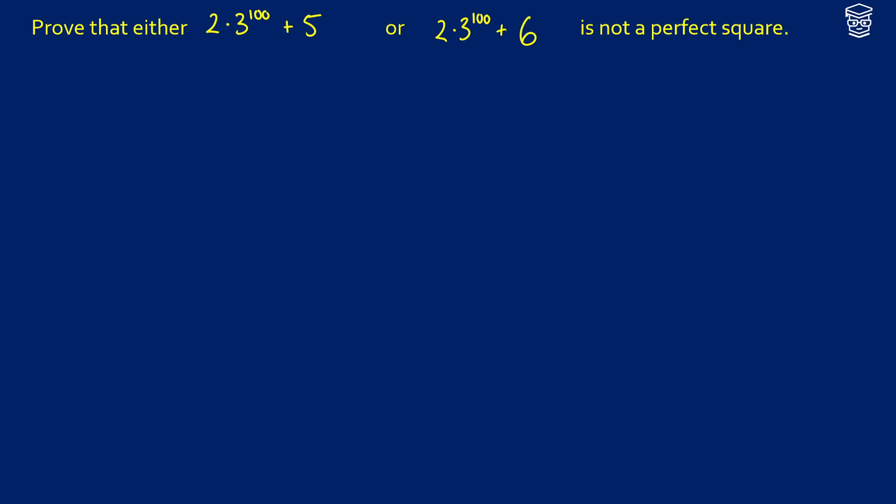Now we don't want to compute these numbers, that would be absurd. We also don't need to show that either of them are perfect squares, we just need to show that one of them is not.